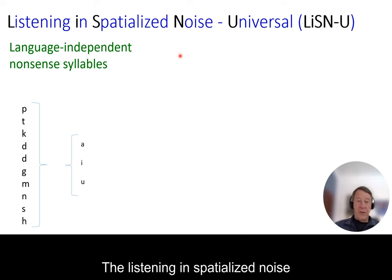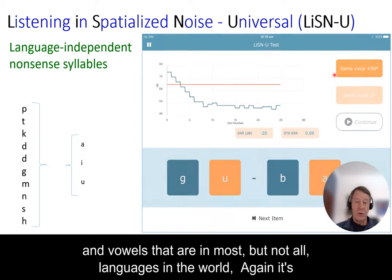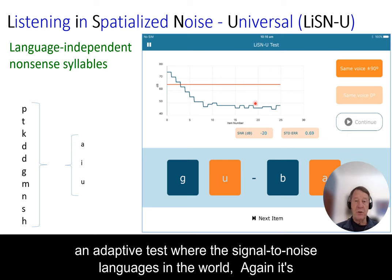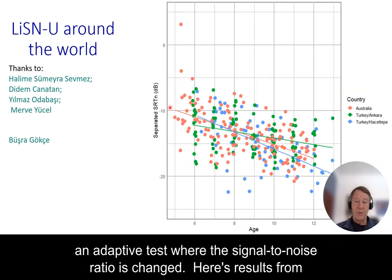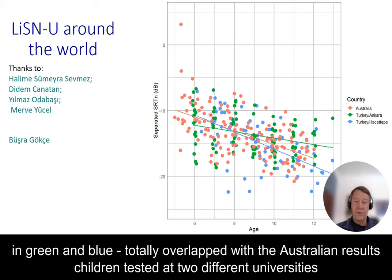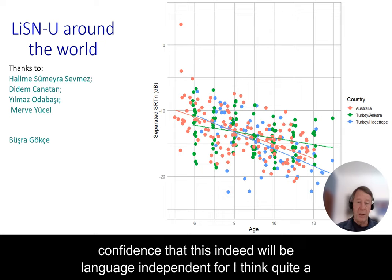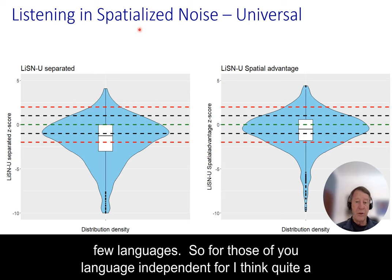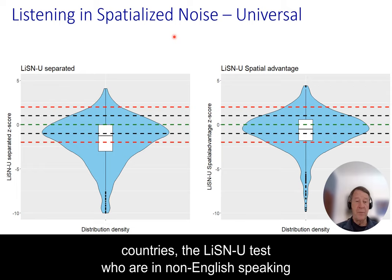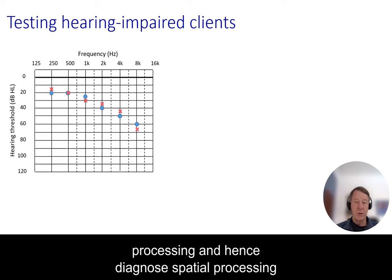The Listening in Spatialized Noise Universal test — LiSN-U — uses nonsense syllables made of consonants and vowels found in most languages. It's an adaptive test where the signal-to-noise ratio is varied. Results from Australian children in red and Turkish children at two different universities in green and blue totally overlapped on top of each other, giving us confidence that this will indeed be language-independent for quite a few languages. For those in non-English-speaking countries, the LiSN-U test is available to measure and diagnose spatial processing disorder.